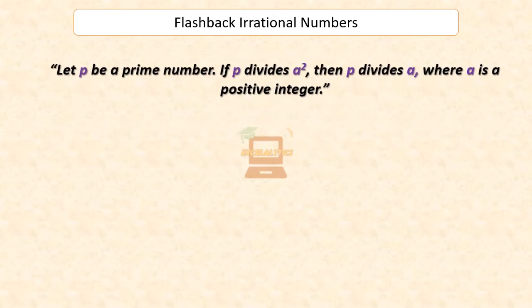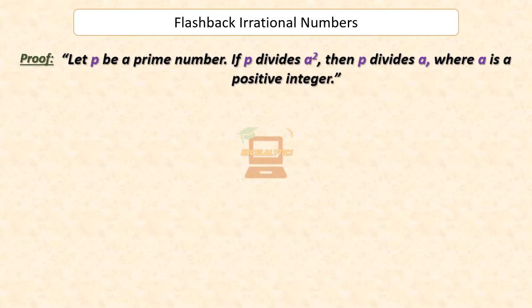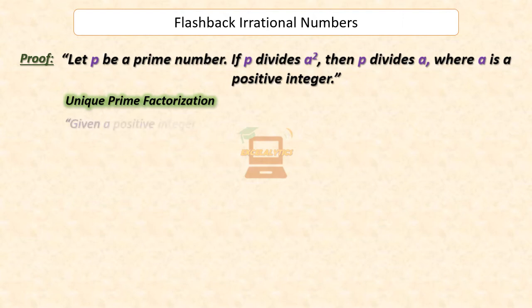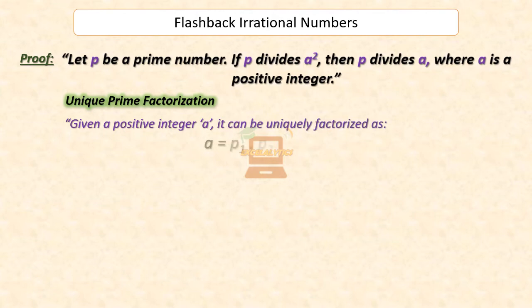Now let us prove this theorem. From unique prime factorization of the fundamental theorem, given a positive integer A, there can be only one factorization for A as P1 × P2 × ... × Pn, where P1, P2, P3 and so on till Pn are primes.